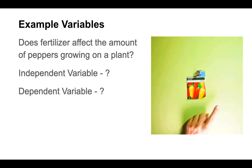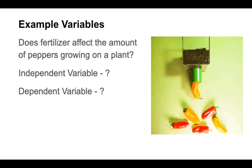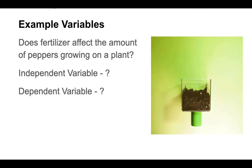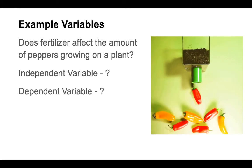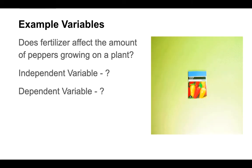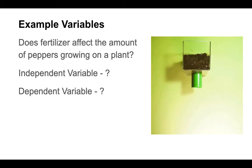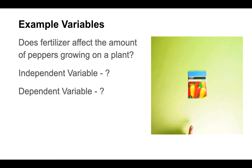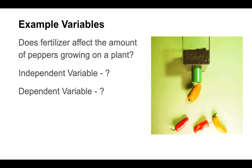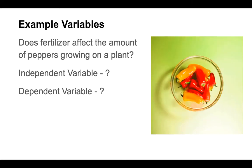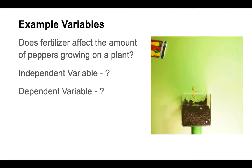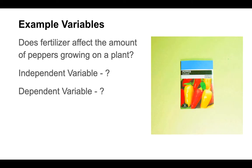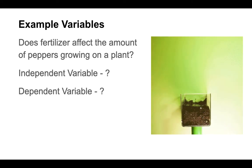For our question here, let's think about this. The very first thing we want to do with our scientific question is figure out what the variables are, because that's going to be extremely important for when we set up our graphs and data tables. So if we have the question: does fertilizer affect the amount of peppers growing on a plant — what are the two things we're measuring? I'm seeing fertilizer and the amount of peppers. So which one is going to be our independent variable, and which one is going to be our dependent variable?